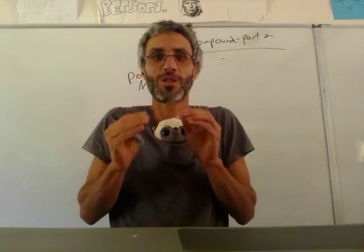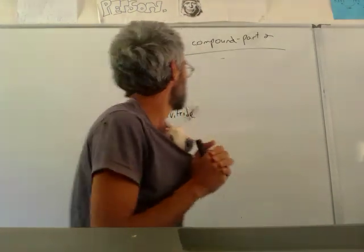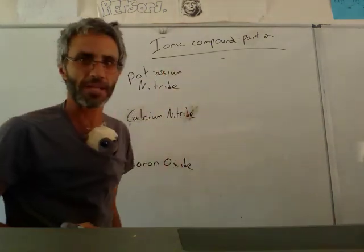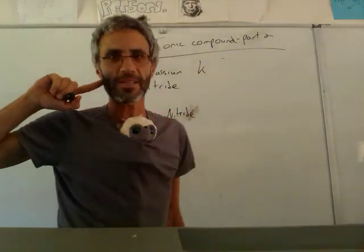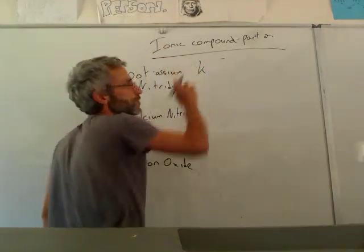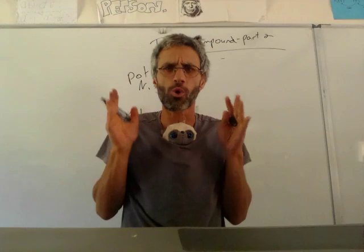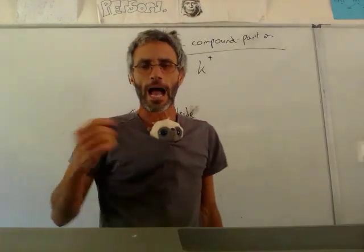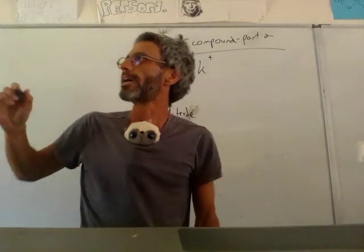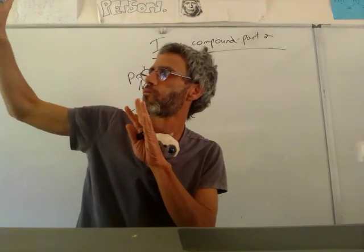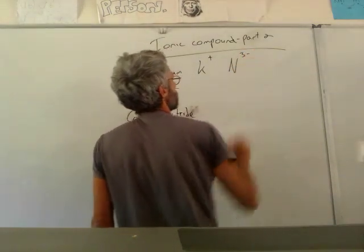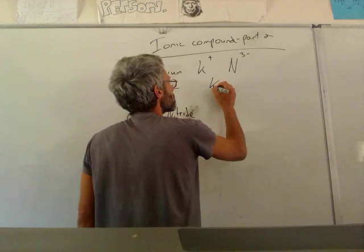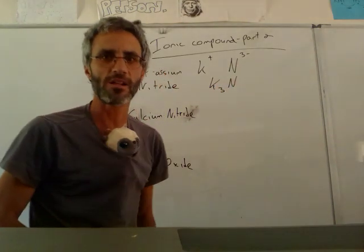This time we're going to look at things that are a little bit more complicated — dealing with three. Potassium nitride: potassium is K, and it's in the first column, so it's plus one. Nitride is the ion that comes from nitrogen. Nitrogen is in the fifth column, which means it needs three more electrons — three minus. So potassium gives one electron and nitrogen needs three. You can understand that the formula is going to be K3N.